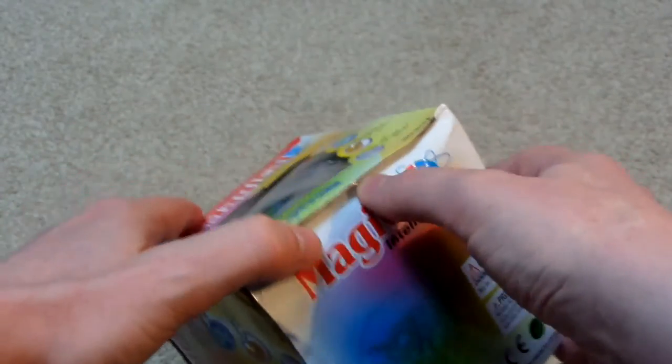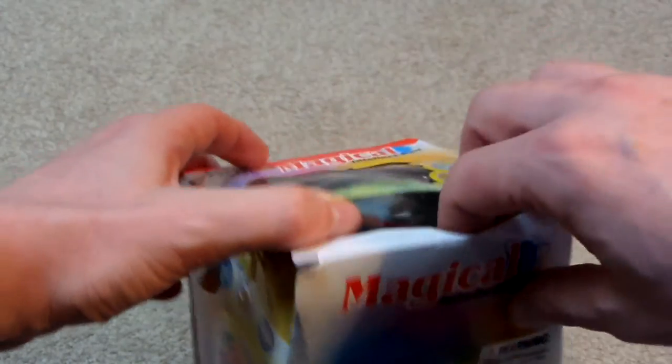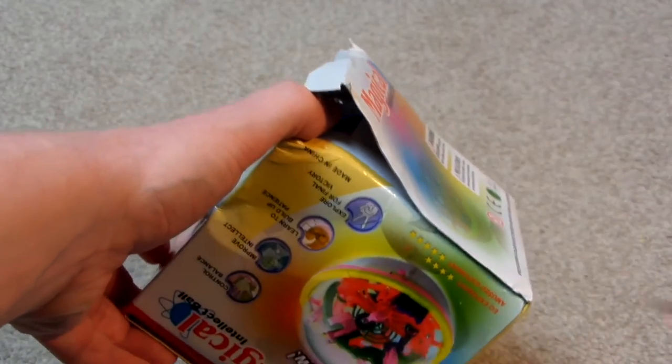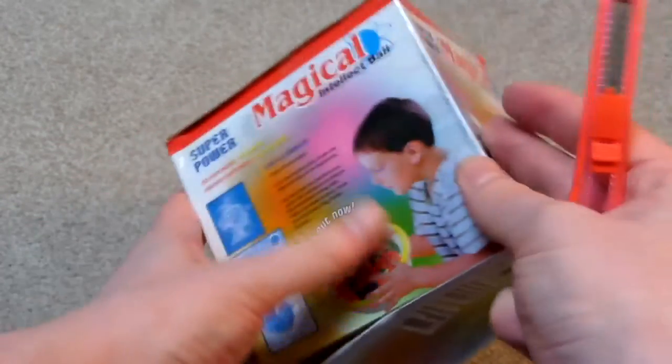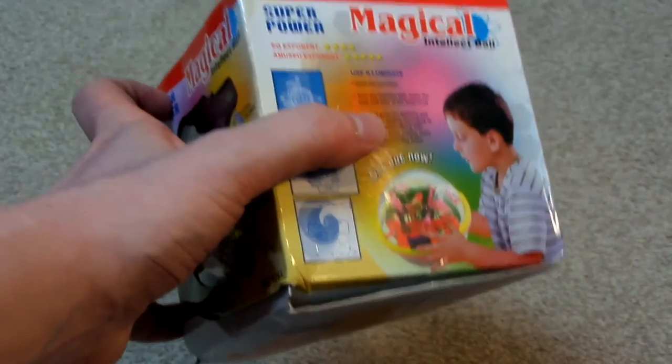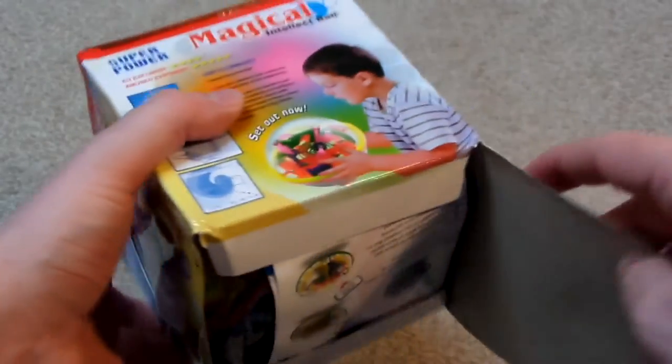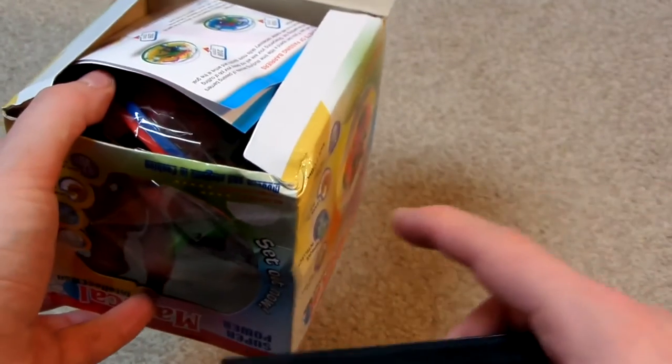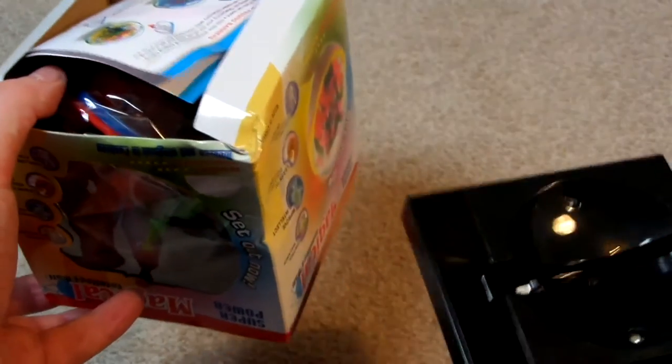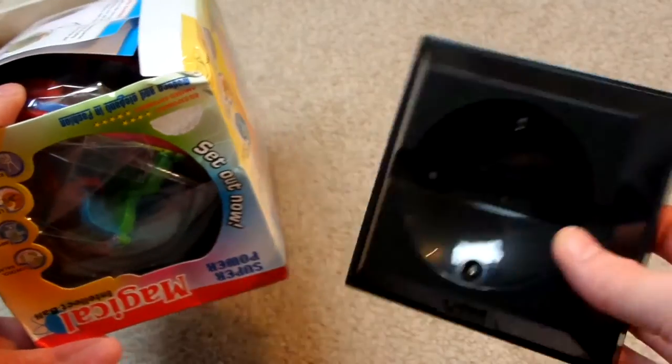So let's open up this box. Yeah, I mean, when you're selling a stand, you shouldn't also have in the title intellect ball and a picture of an intellect ball as well, because it's going to make people think that they'll be getting both of these things rather than just one.